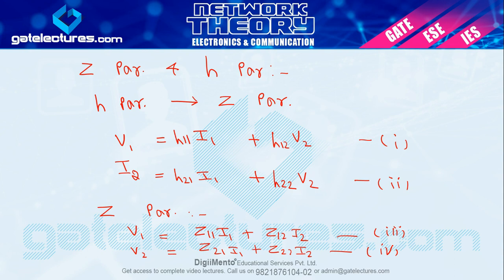We want to convert H parameters into Z parameters. The use of this is: suppose in a network circuit we are asked to calculate Z parameters, but calculating H parameters in that circuit seems very easy. So we will first calculate H parameters and then by formula convert them into Z parameters. There are two methods for this.